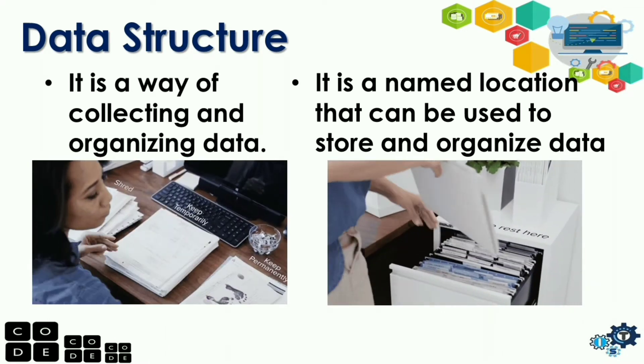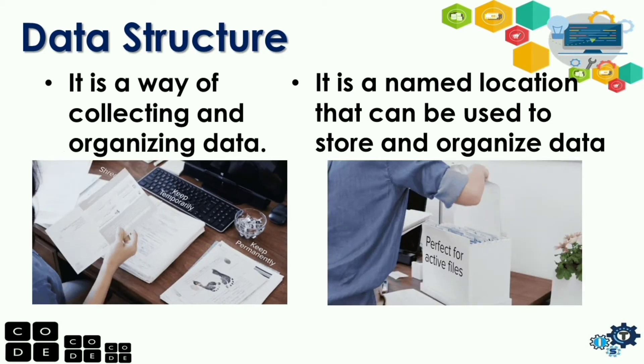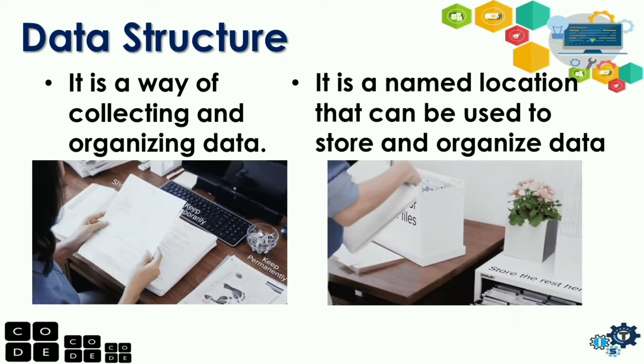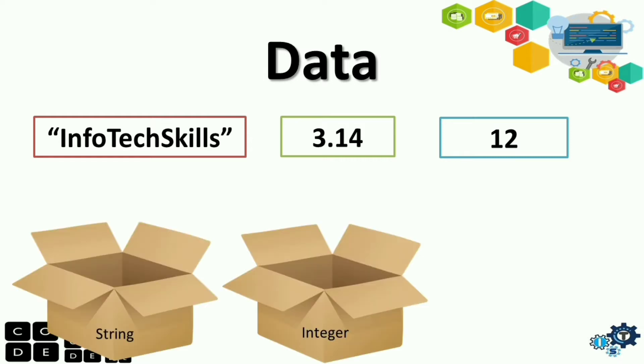Ibig sabihin lang yun, guys, dapat meron siyang name para alam mo kung saan mo kukunin or yung store yung specific data. So, for example, we have this data. We have Infotech skill 3.14 and 12. Then next, we have this boxes.